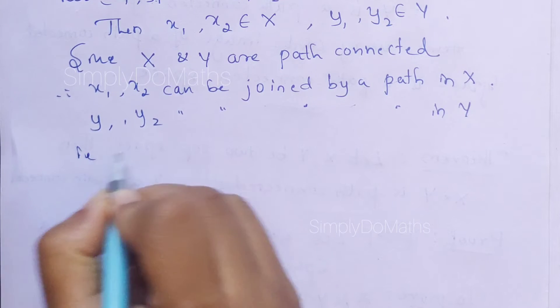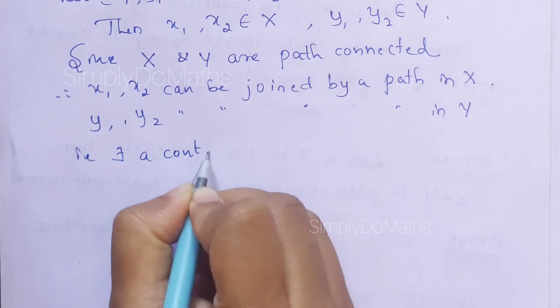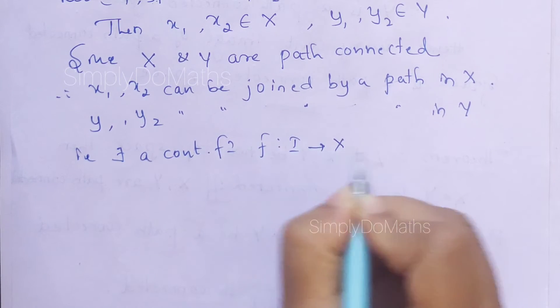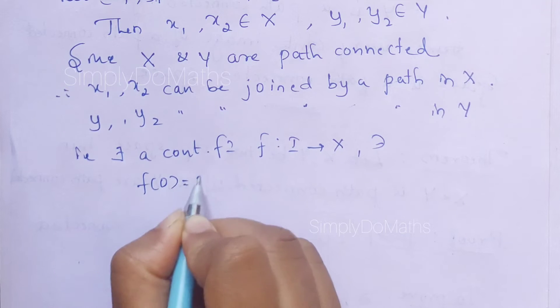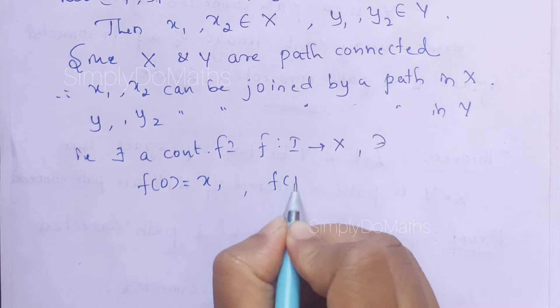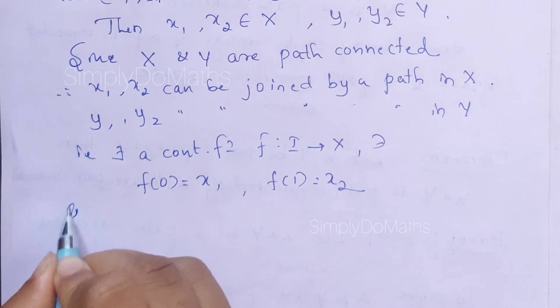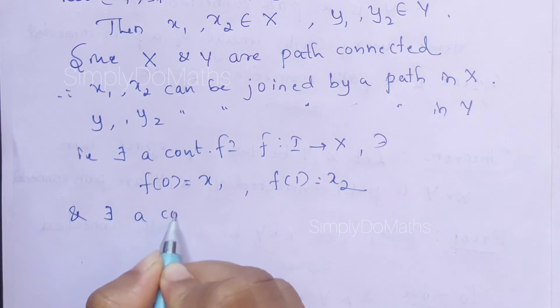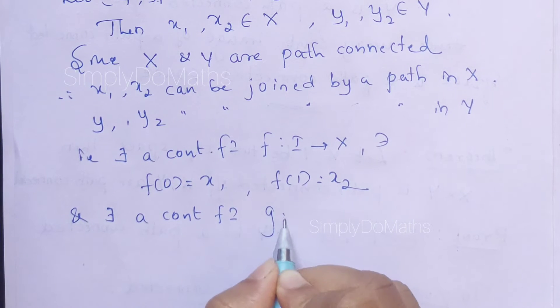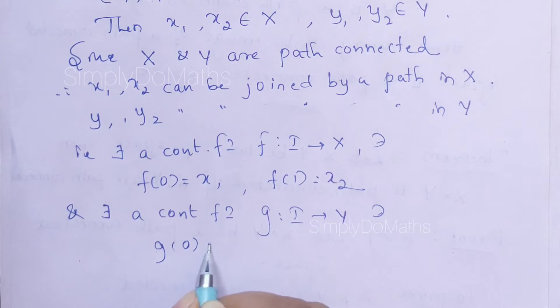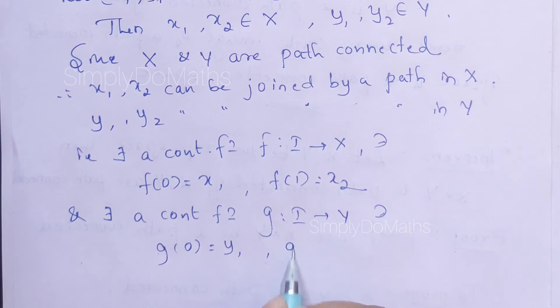That is, there exists a continuous function f from I to X such that f(0) equals x₁ and f(1) equals x₂. This is for X. Similarly, there exists a continuous function g from I to Y such that g(0) equals y₁ and g(1) equals y₂, because I is also a path-connected space.